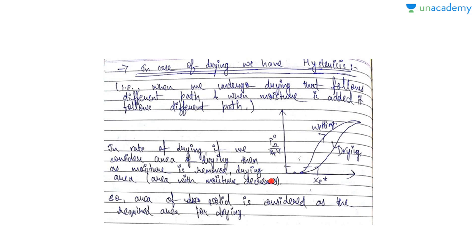In the rate of drying, if we consider the area of drying, as moisture is removed the drying area varies. To remove this complexity, the area of the solid is considered as the required area for drying. We do not consider area on a wet basis or dry basis — we only consider the area of the solid. In the next lecture we will be covering some more topics. Thank you.